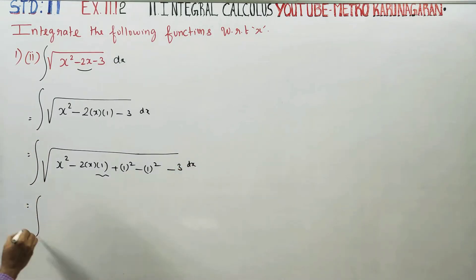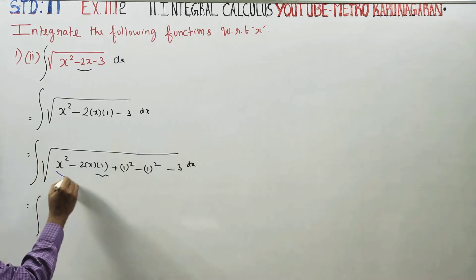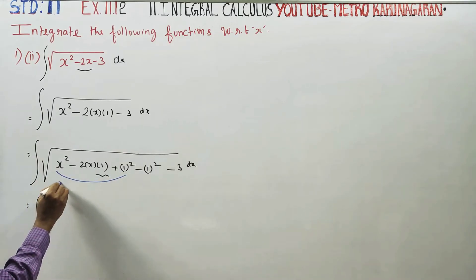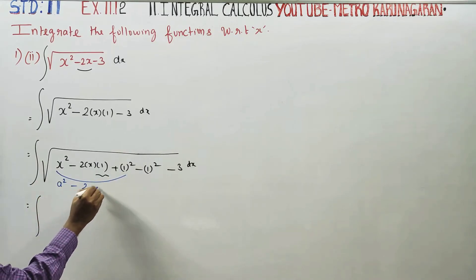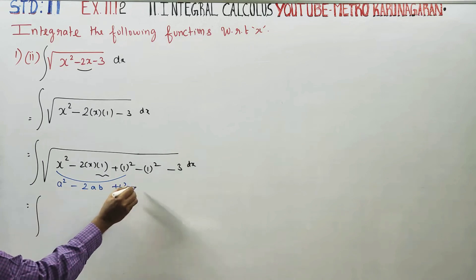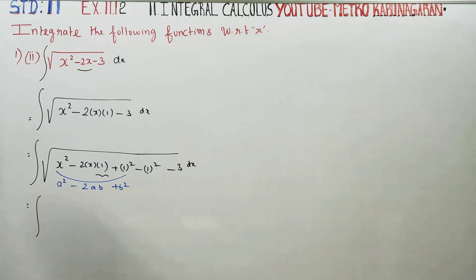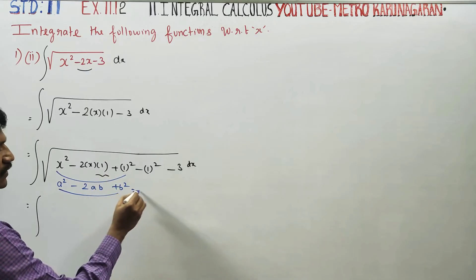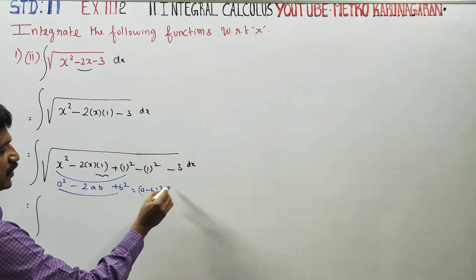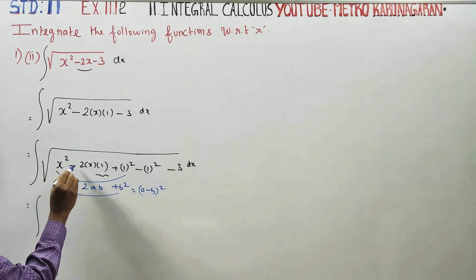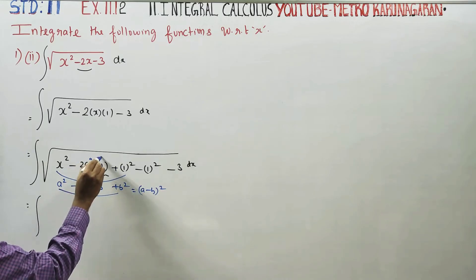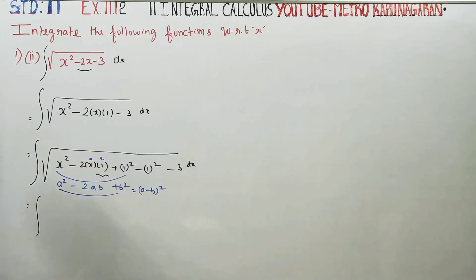Next stage: integration of this form uses the identity a squared minus 2ab plus b squared. This is the completing square method, giving us the a minus b whole square form: a squared minus 2ab plus b squared. Here this is a, and this is b.